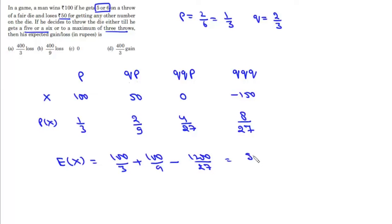Now this is 900 by 27 plus 300 by 27 minus 1200 by 27, which is 0. So expected value is 0.